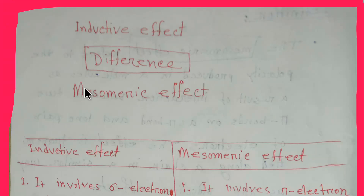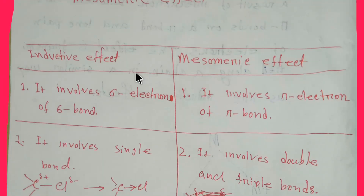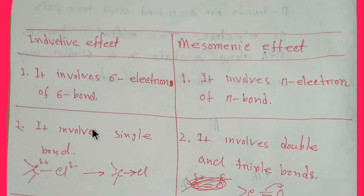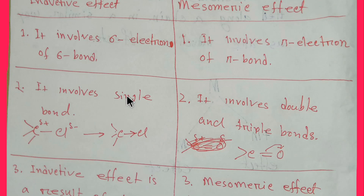Today we are going to learn the difference between the inductive effect and mesmeric effect. The inductive effect involves sigma electrons of sigma bonds. On the other hand, the mesmeric effect involves pi electrons of pi bonds. The inductive effect involves single bonds, while the mesmeric effect involves double and triple bonds.